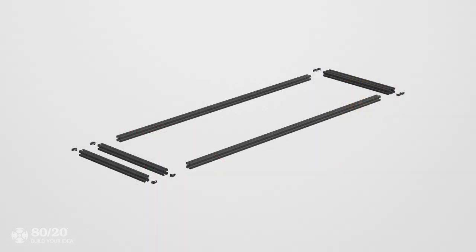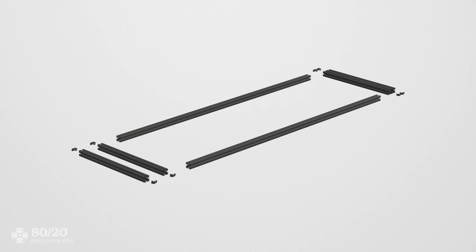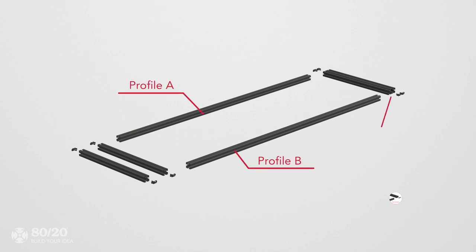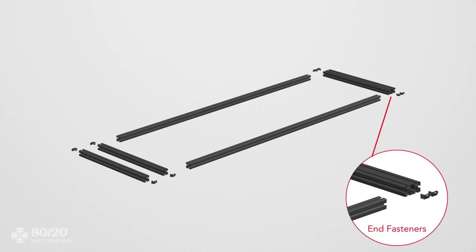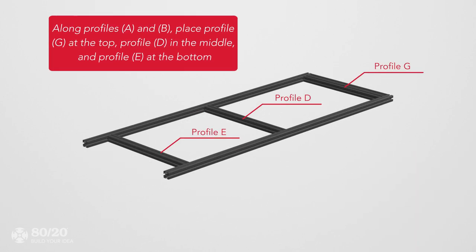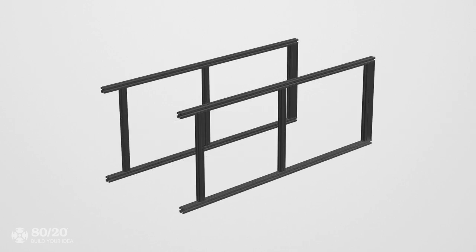We'll start by building the side sections. Connect profile A and profile B together using end fasteners. Repeat the process to build the other side section.